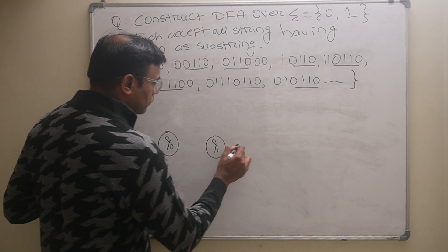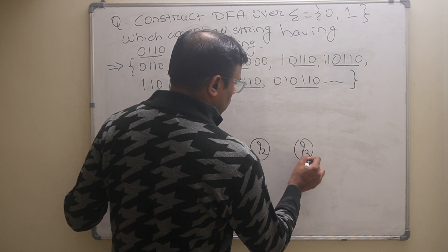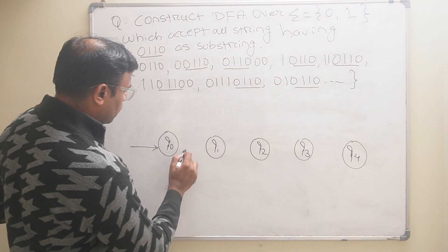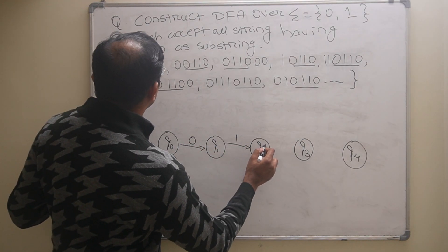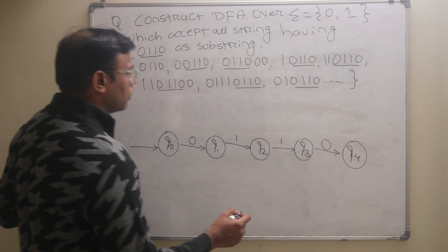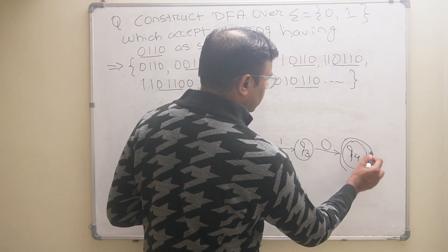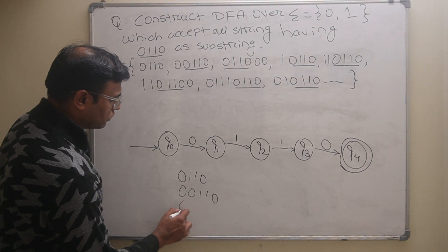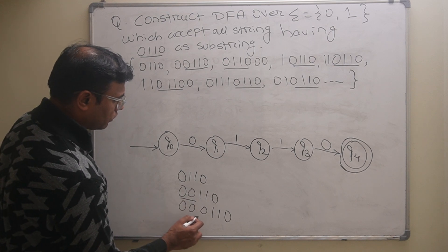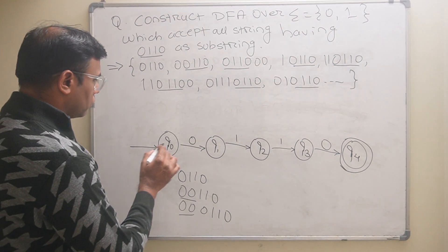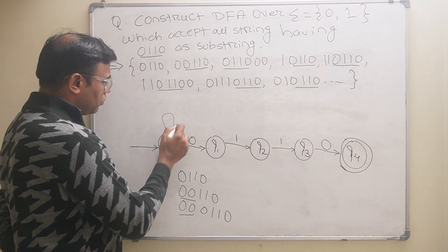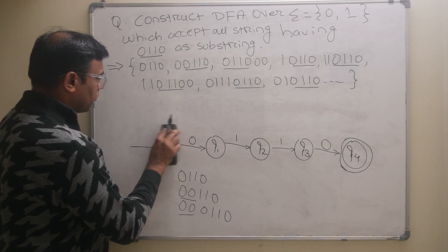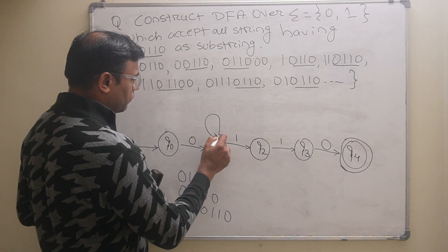First I will draw all five states: q0, q1, q2, q3, and q4. Now q4 will be the final state. For the first value 0,1,1,0 — it can be 0,0,1,1,0 or 0,0,0,1,1,0 — there can be any number of zeros at the beginning. So we apply a loop of zero on q0 so it can accept any number of zeros.